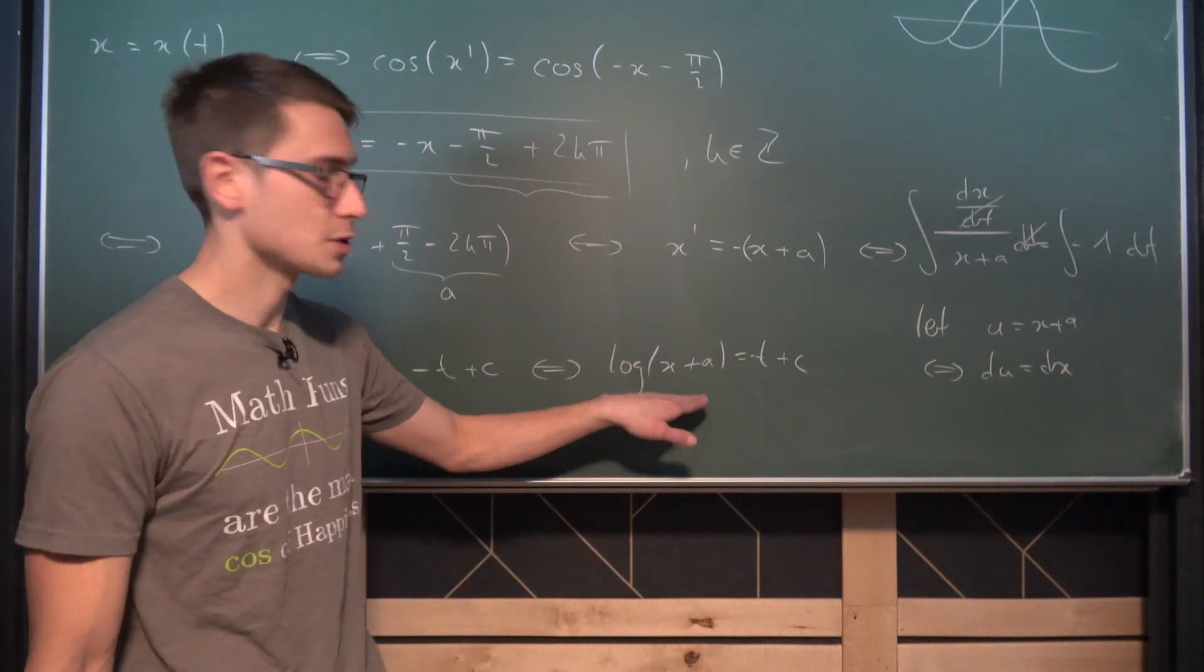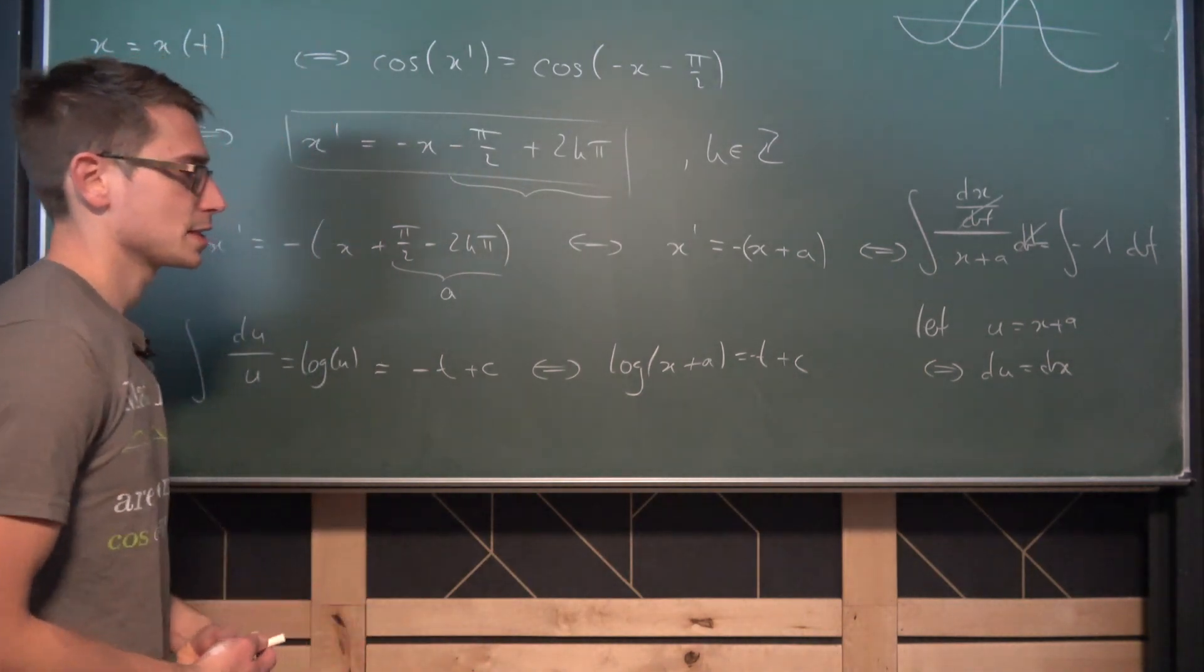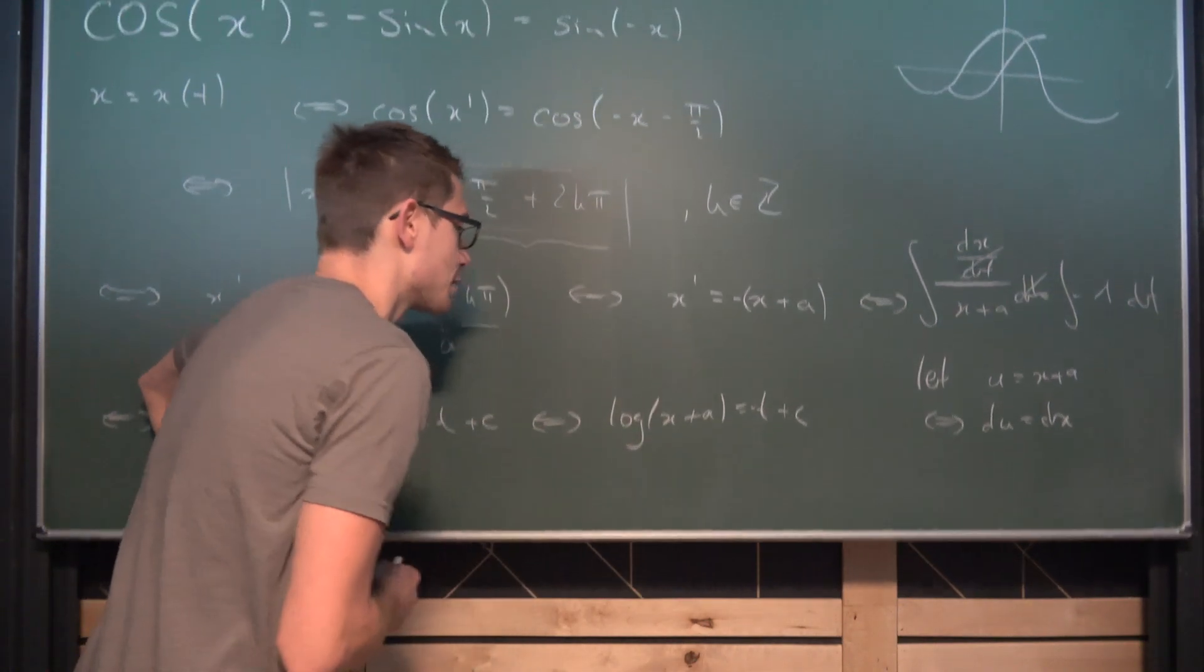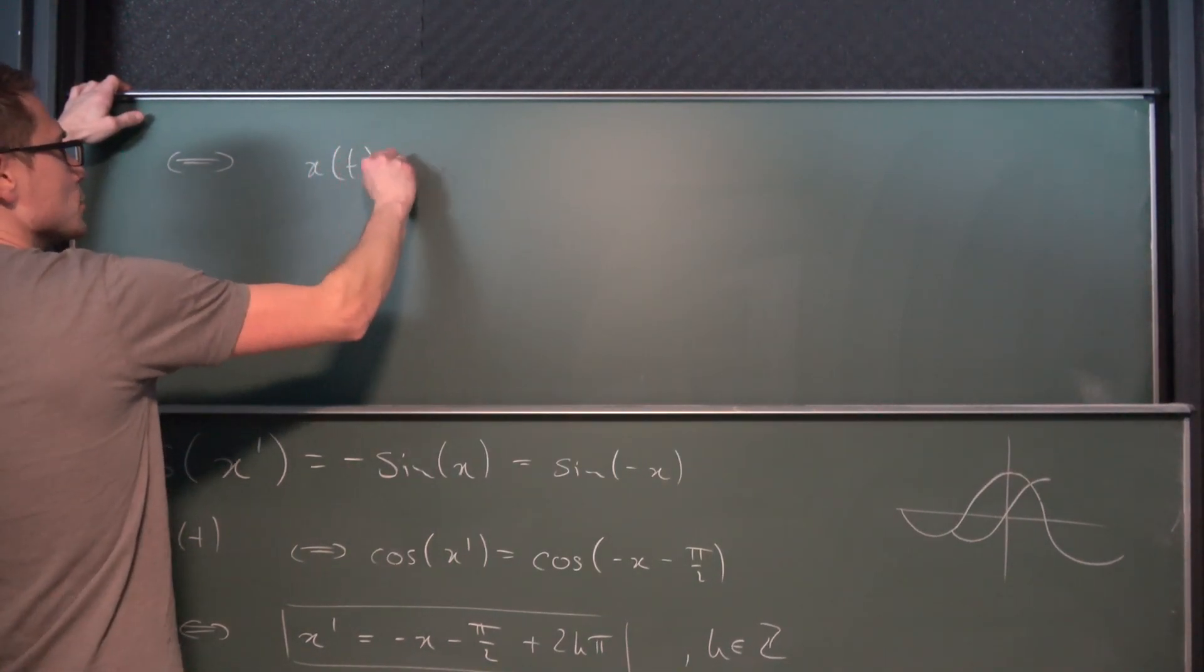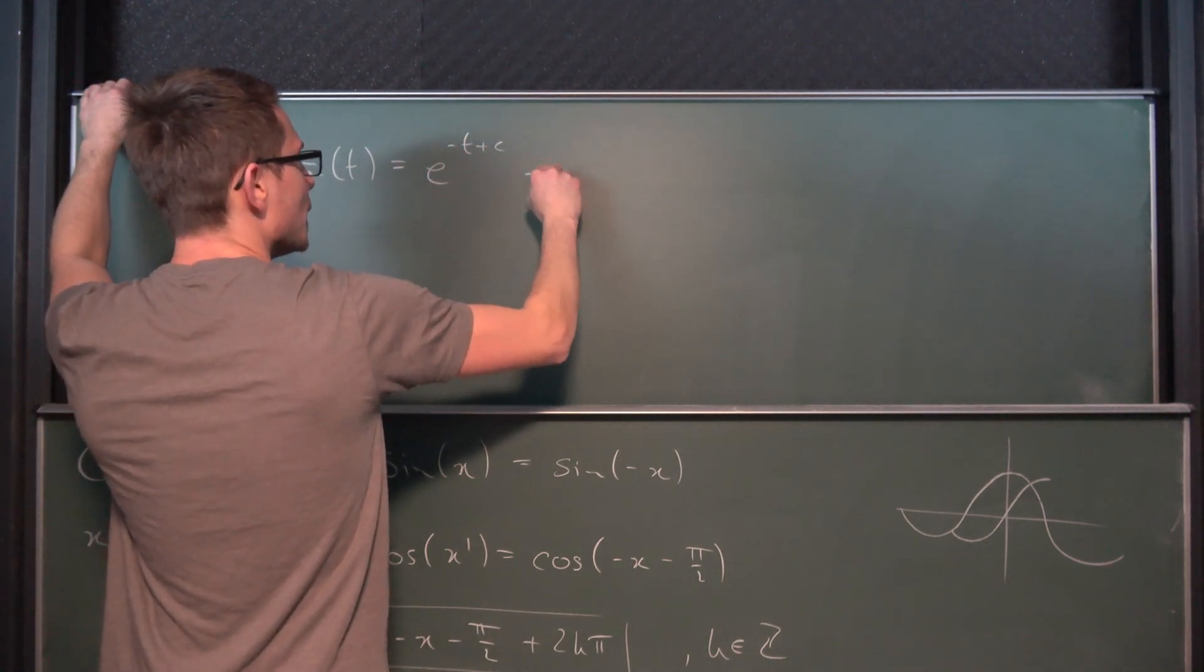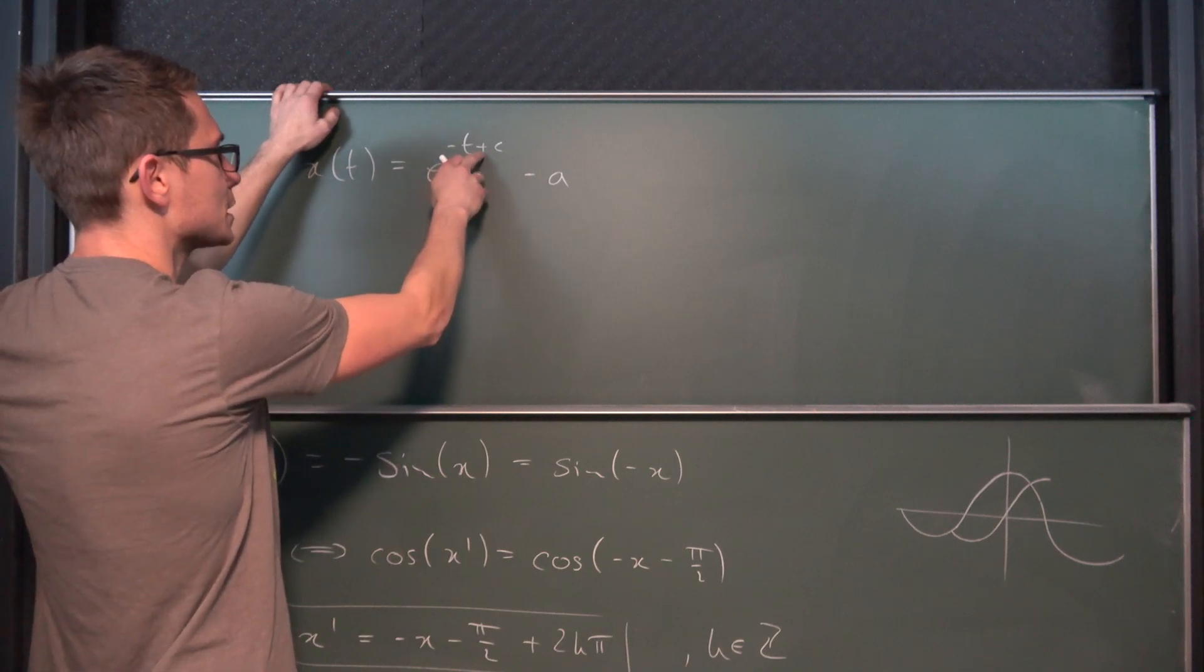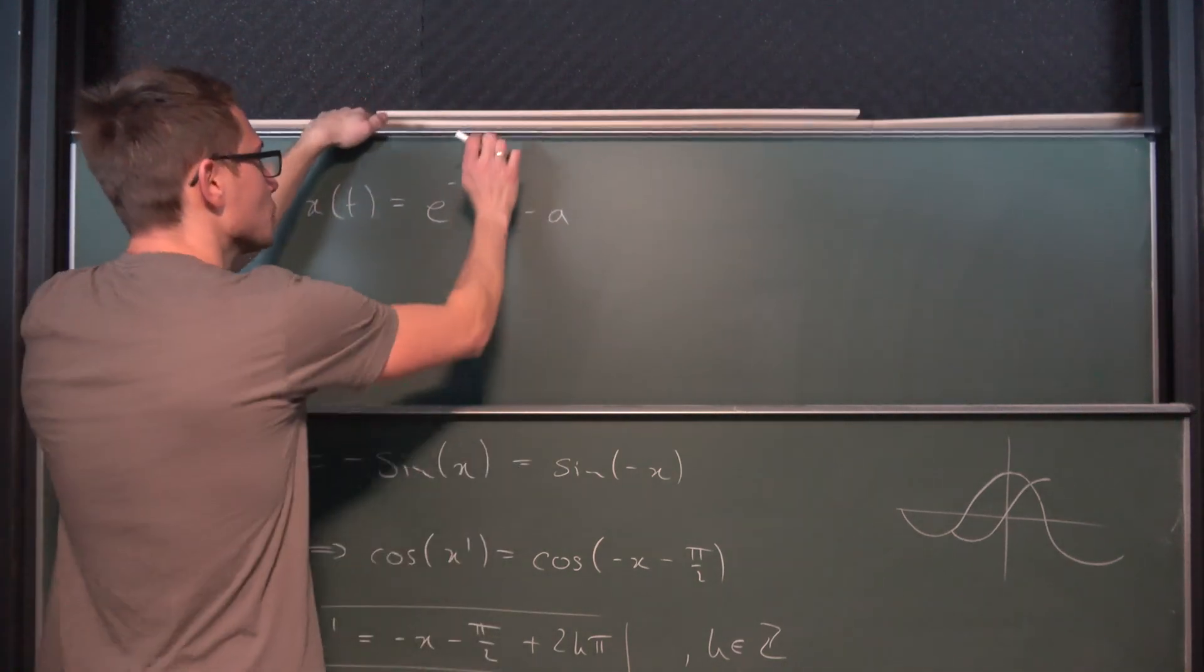And overall you would also get a constant over on this side but you can just subtract it and solve it into this constant. So that's nice and fine. So this right here is nearly the solution to our differential equation. Last thing you need to do is to take the natural exponential function on both sides and subtract a. Giving us overall that x with respect to t, the solution to our differential equation is e to the negative t plus c minus a overall. If we were to solve it. And this right here we can actually split up a tiny little bit. So e to the negative t plus c is the same as e to the negative t times e to the c, where e to the c is yet another constant.